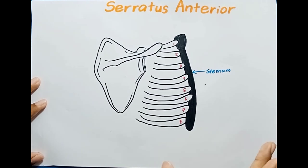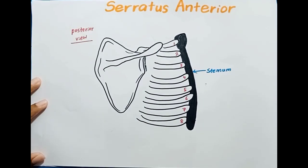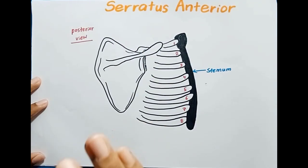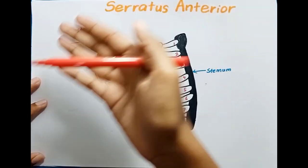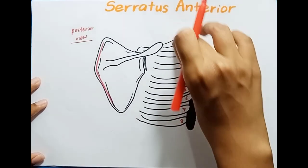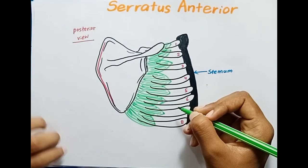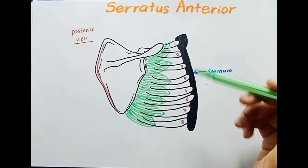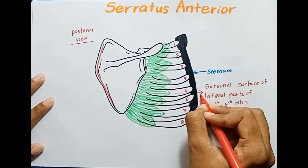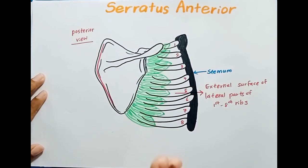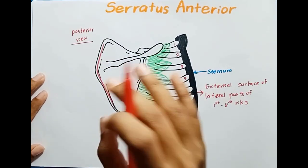The serratus anterior inserts into the anterior surface of the medial border of the scapula. Here you can see the scapula from the posterior view. This is the medial border, and the anterior surface is in front — because this is a posterior view, it cannot be seen from this angle. The muscle starts from the ribs and inserts into the anterior surface of the medial border of the scapula.